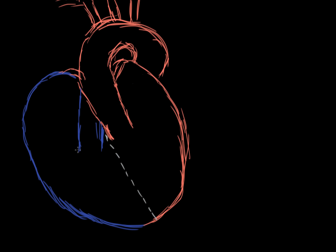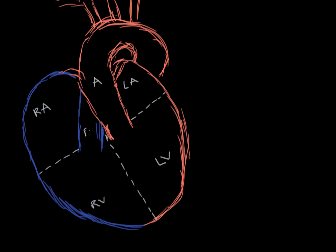We can further split the heart into upper and lower parts. The upper part is where we have our atria — the right atrium on the right side and the left atrium on the left. Below those we have our right and left ventricles. The tube on the left side is the aorta, the major artery that sends blood to the rest of the body. On the right side, we have the pulmonary trunk, which sends blood from the right ventricle to the lungs to get oxygenated.